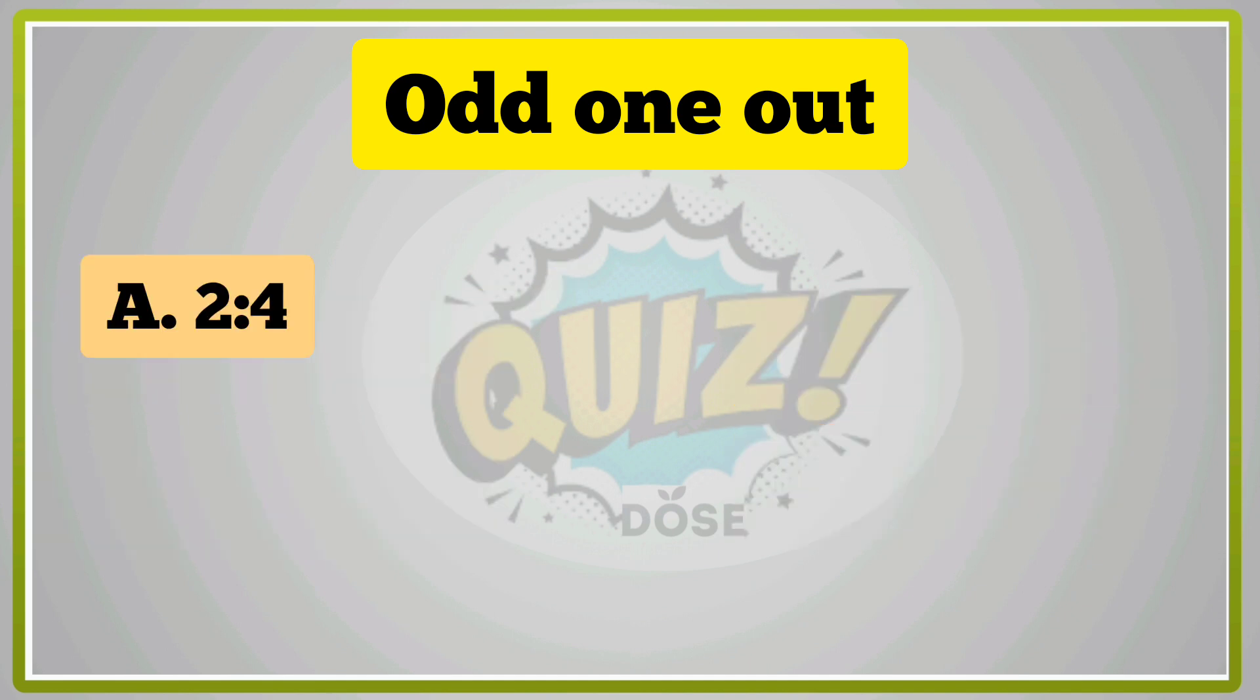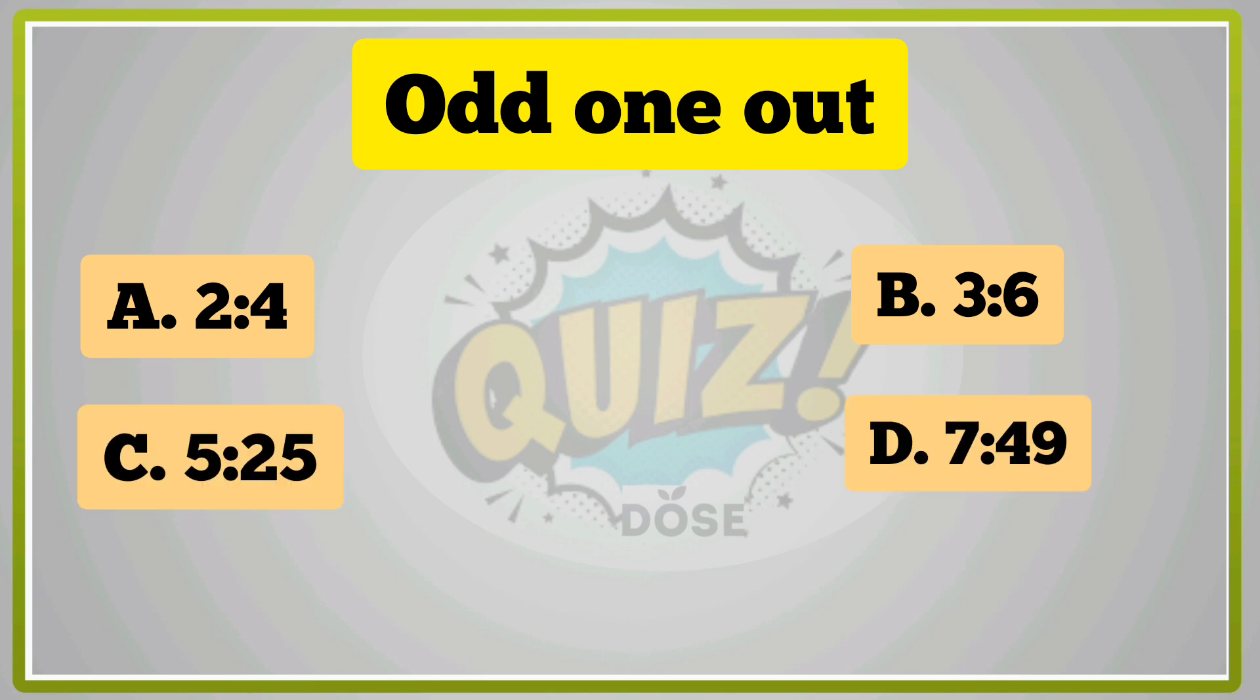A, 2, 4. B, 3, 6. C, 5, 25. D, 7, 49. B is right answer. Remaining all are number and square.